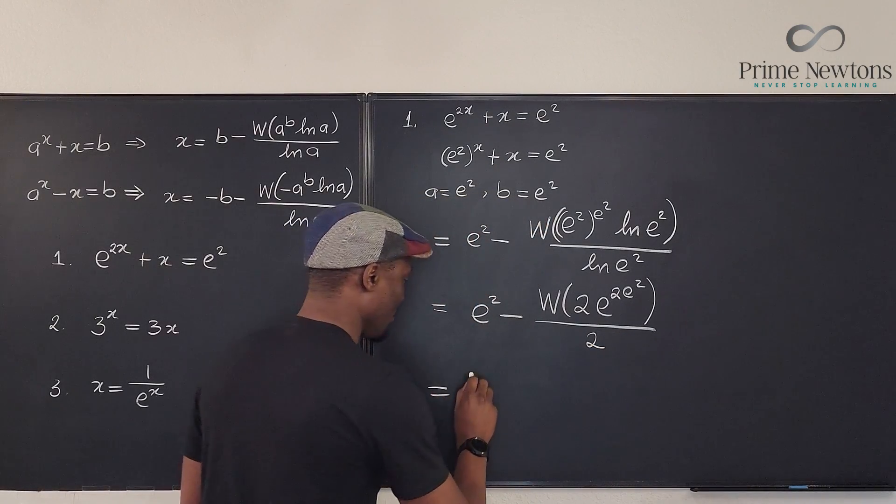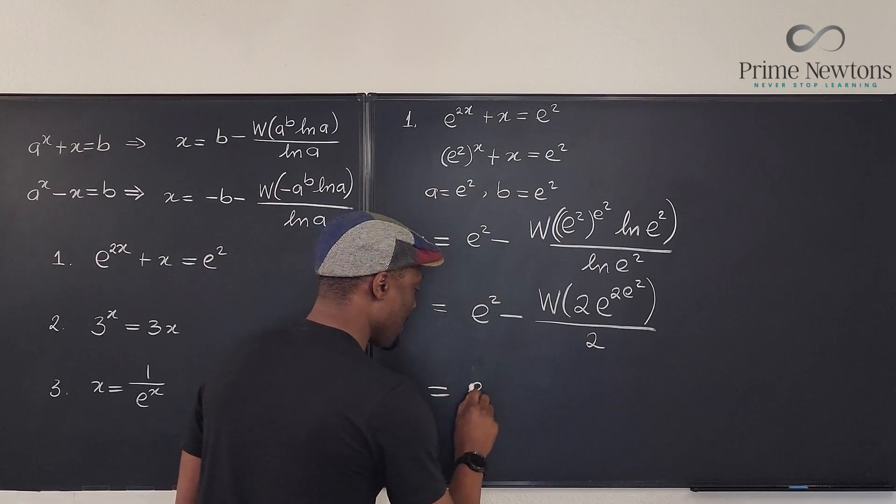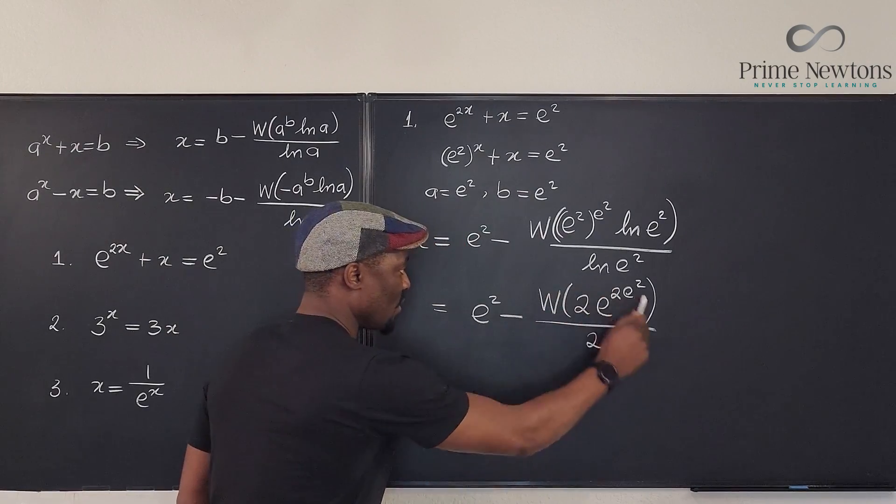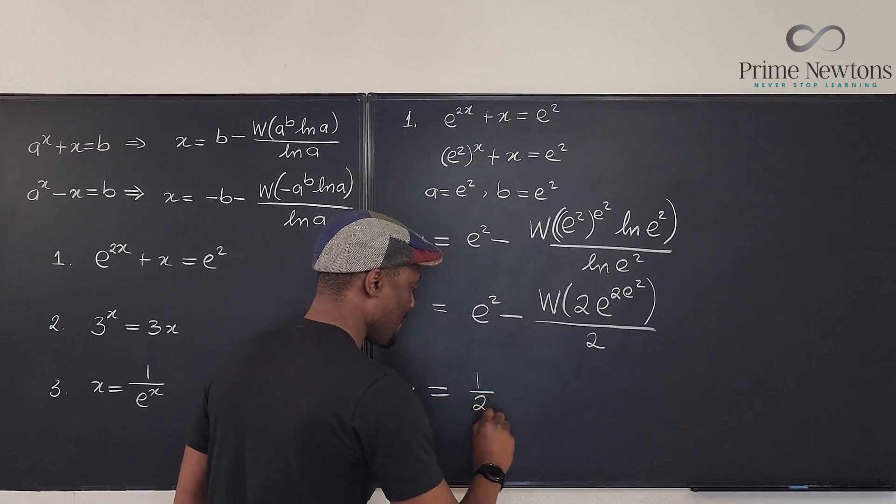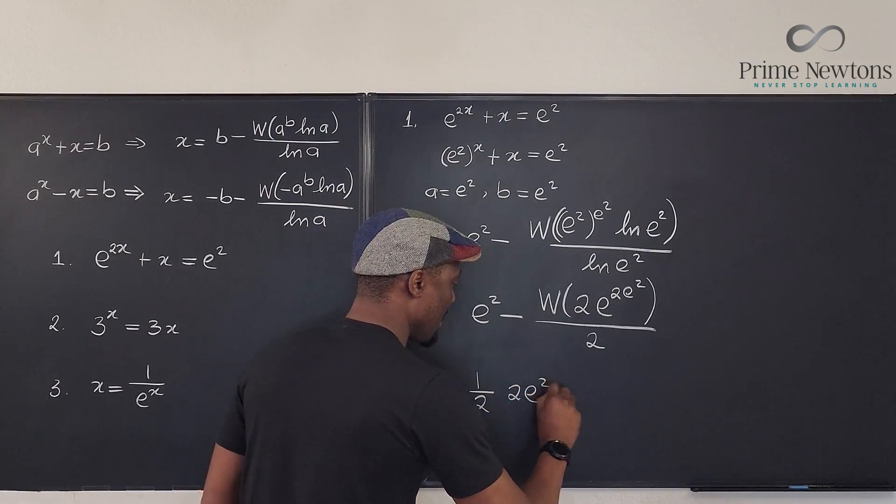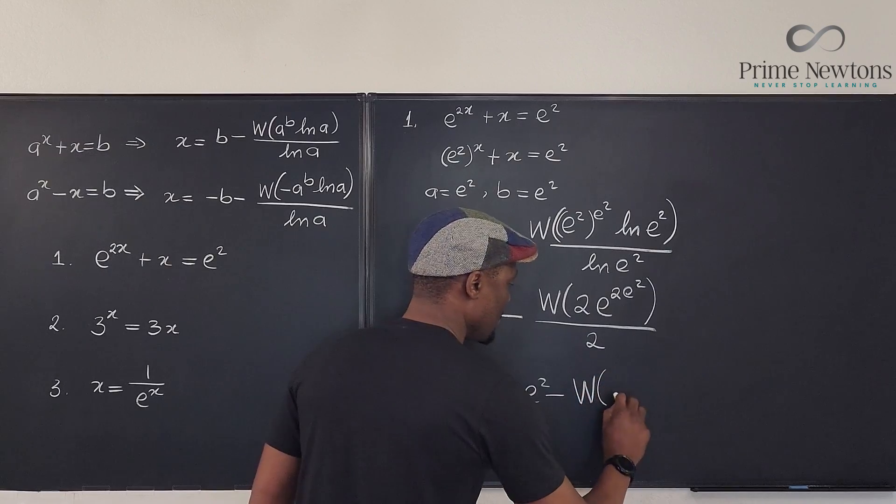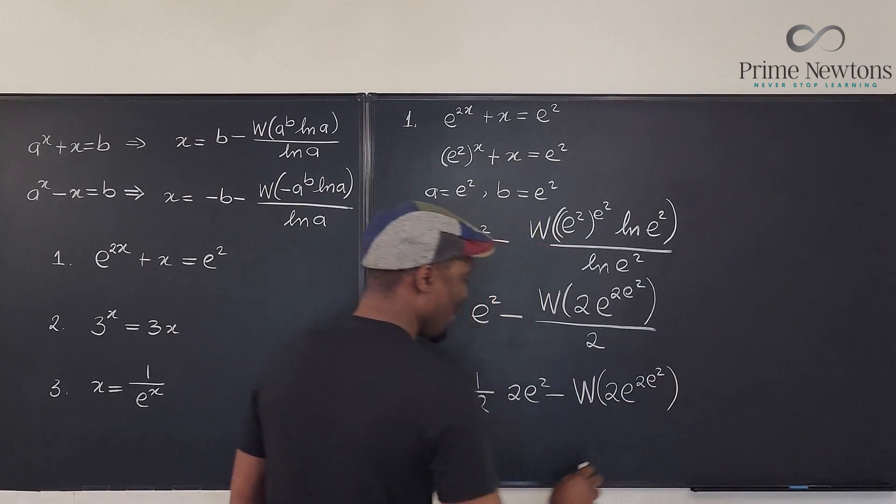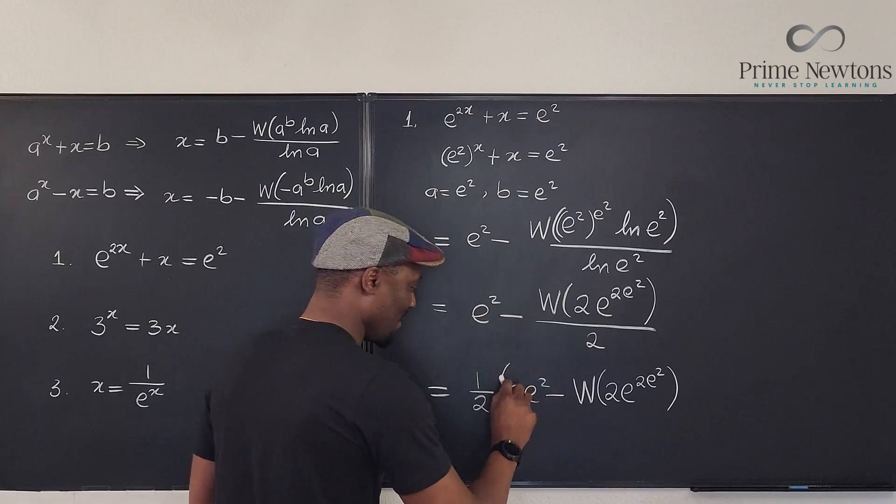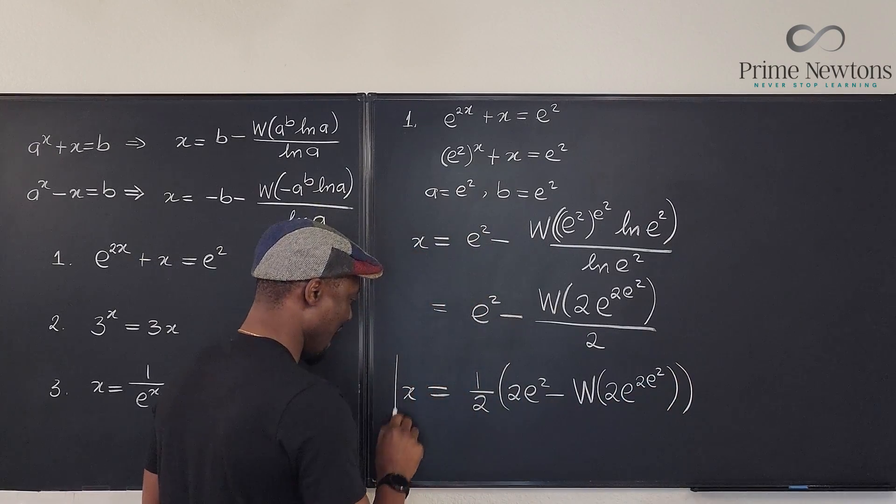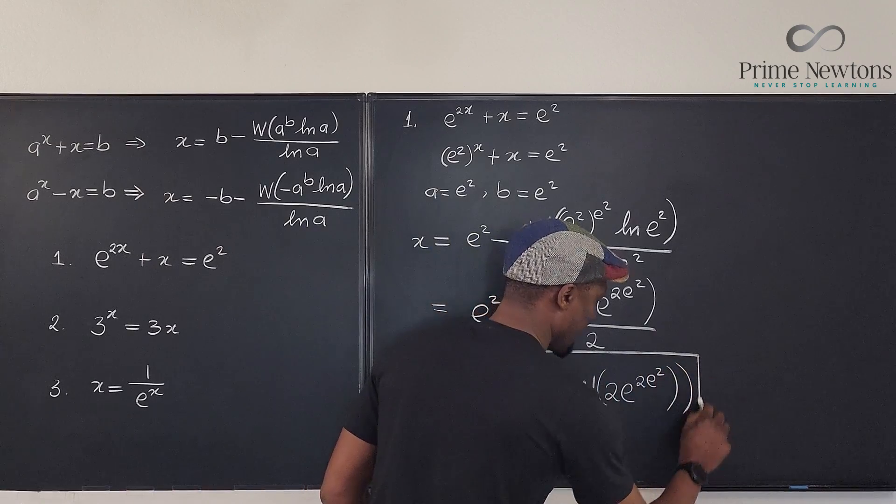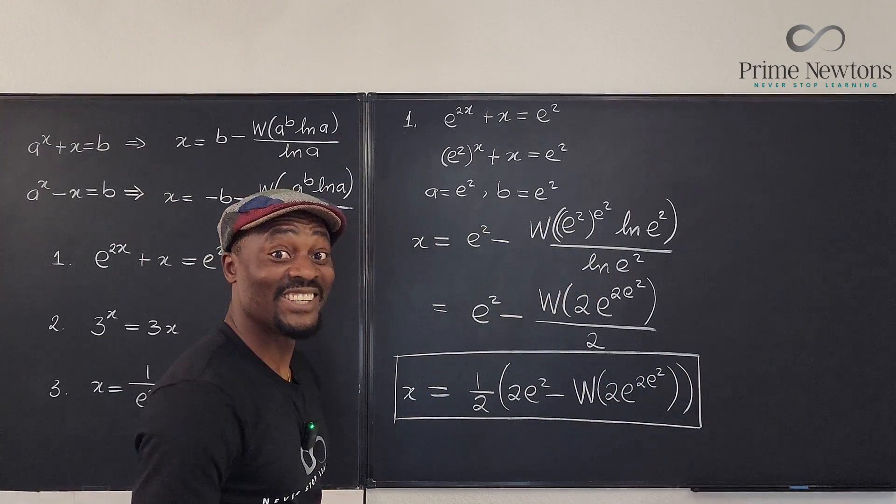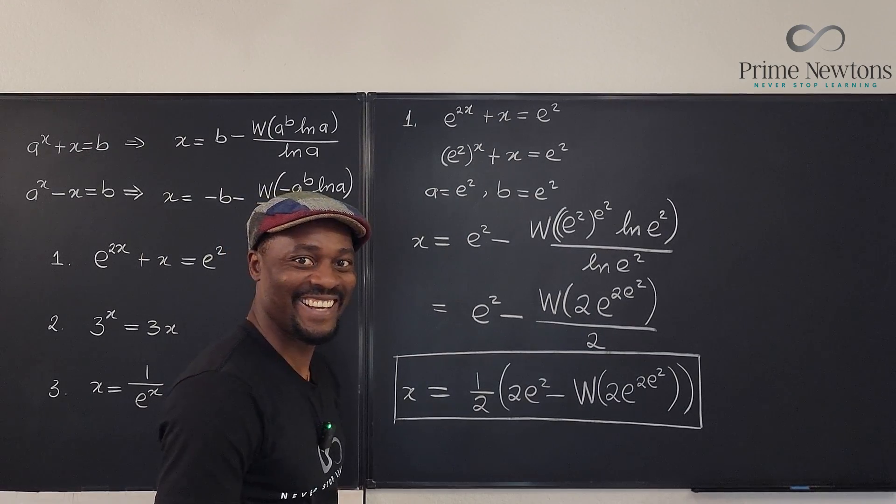We have x will be equal to e squared minus. Oh, let's write it this way. To put these all together, you can write it as 1 half of 2e squared minus the w of 2e to the 2e squared. What a beautiful answer. Look at that. That's a lot of e's.